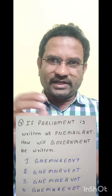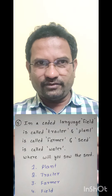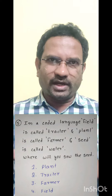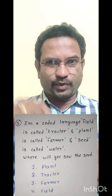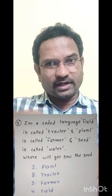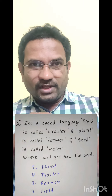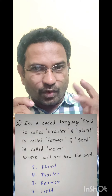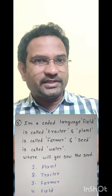Last question: In a coded language, field is called tractor, plant is called farmer, and seed is called water. Now where will you sow the seed? Sowing means putting the seed inside a field. The equivalent word in the coded language for field is tractor. The options are plant, tractor, farmer, field. The question asks for the coded word — you cannot directly write field. Since field is coded as tractor, the right answer is tractor, not field.